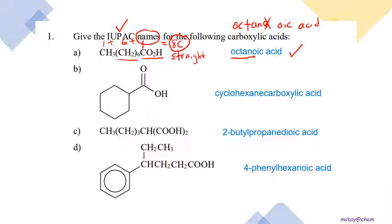For question 1b, the longest chain is clearly the cyclohexane ring. Since cyclohexane is the parent ring but COOH is the principal functional group, the name is cyclohexanecarboxylic acid.